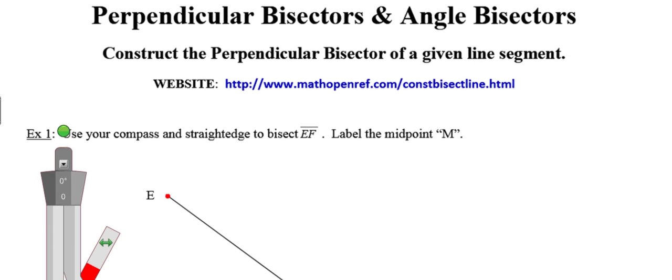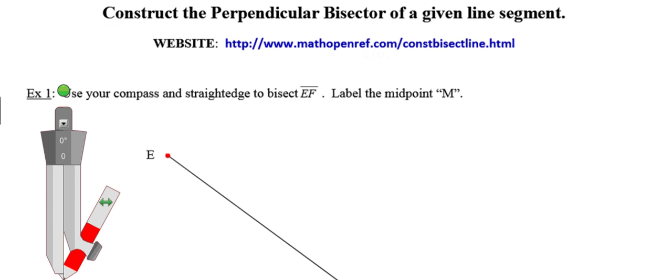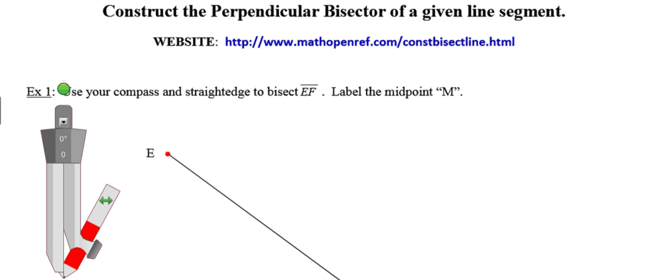The first construction we're going to look at is constructing the perpendicular bisector of a given line segment. Like the other constructions we performed, if you're having trouble with this, you can go to this website and it will guide you through the construction one step at a time. You can also link to this website via my website.